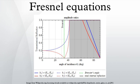When moving from a denser medium into a less dense one, above an incidence angle known as the critical angle, all light is reflected and Rs = Rp = 1. This phenomenon is known as total internal reflection. The critical angle is approximately 41 degrees for glass in air.